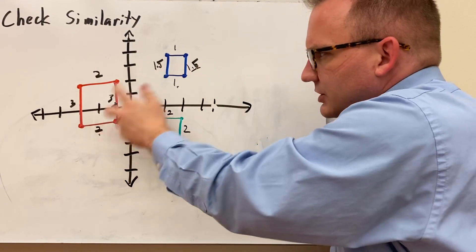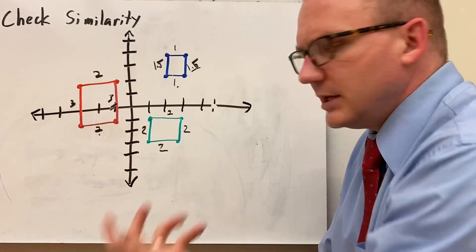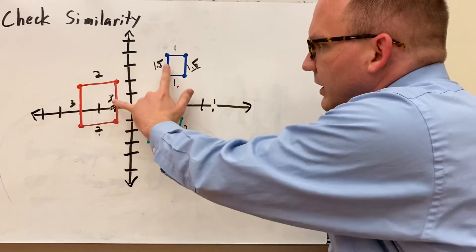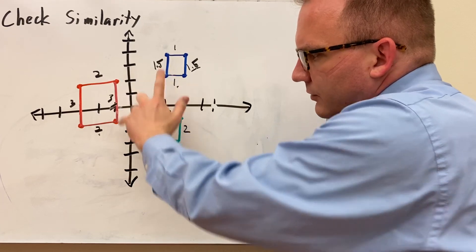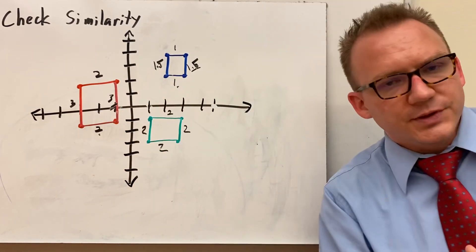But either way, these two end up being similar quadrilaterals, and this one is not similar, because it does not share that same ratio with the sides.